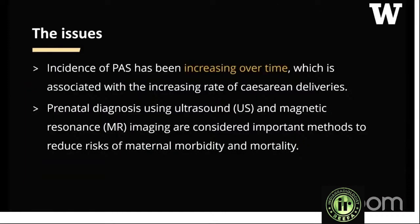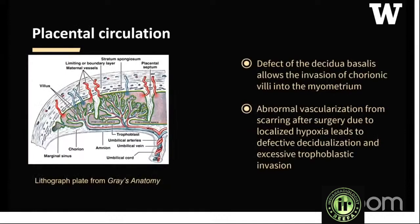The incidence of PAS has been increasing over time, mainly because of the increasing rate of cesarean sections. Ultrasound and MRI are performed for diagnosis and are considered important methods to reduce the risk of maternal morbidity and mortality. In normal placentation, extravillous trophoblasts invade the decidua and convert the spiral arterioles of the endometrium to uteroplacental vessels — basically decidualization.